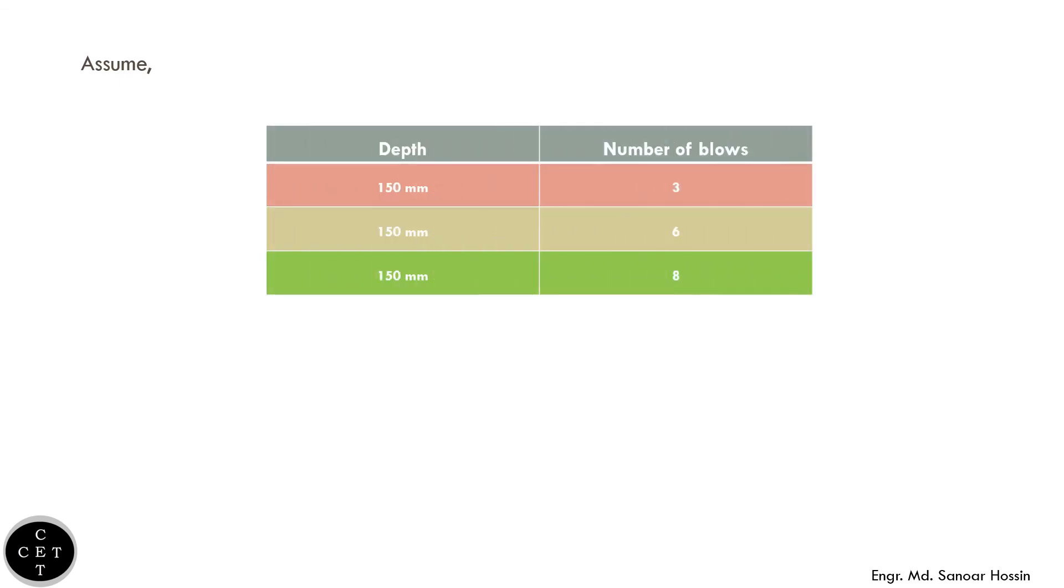Here we have given an example of how we calculate SPT number. Let's assume for first 150 millimeters depth penetration we got number of blows 3, for second 150 millimeters depth we got 6, and for third 150 millimeters depth 8. The number of blows required for first 150 millimeters depth penetration is ignored, so SPT number will be 6 plus 8 equals 14.